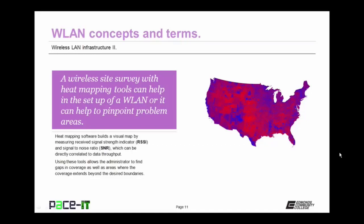The heat mapping software builds a visual map by measuring the received signal strength indicator, or RSSI, and the signal to noise ratio, or SNR, which can be directly correlated to data throughput. Using these tools allows the administrator to find gaps in coverage, as well as areas where the coverage extends beyond the desired boundaries, helping to create a more efficient and secure network.